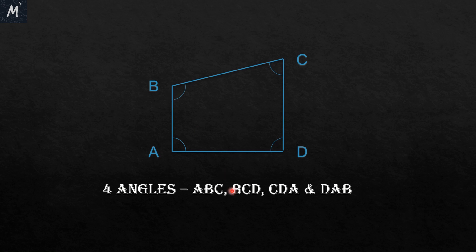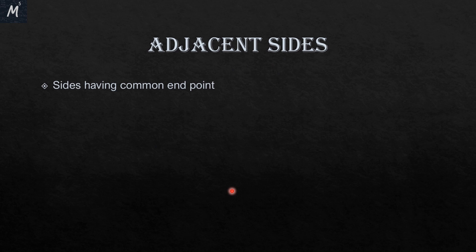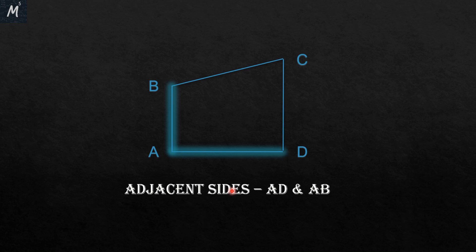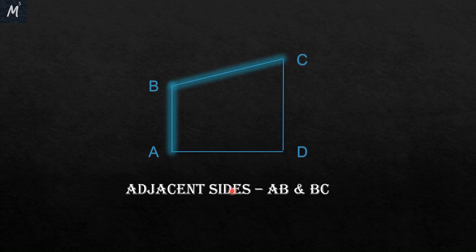Let's move on to the next topic: adjacent sides. Adjacent sides are those sides which have a common endpoint, or we could say a common vertex. So if we take A as the common vertex, then AB and AD are the adjacent sides. Taking B as the common vertex, AB and BC are adjacent. Similarly, BC and CD, and CD and DA are the other pairs of adjacent sides.